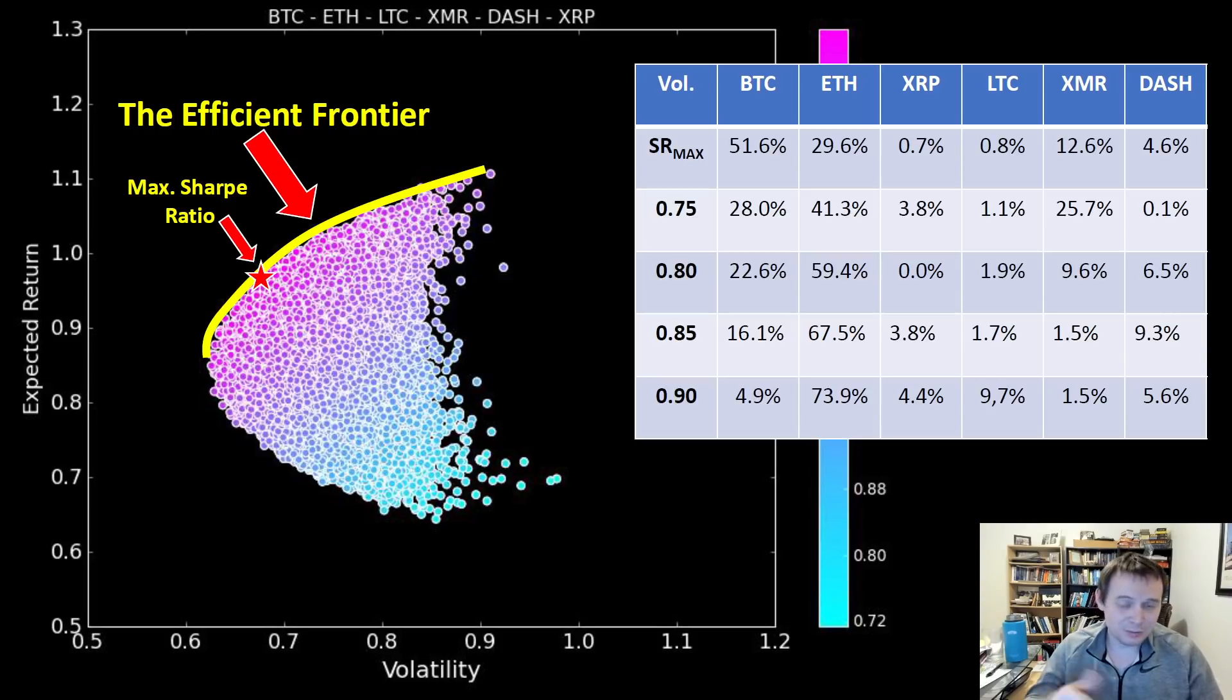But for Bitcoin and Ethereum it tends to fluctuate between the same numbers. I've seen it go as low as 60 Bitcoin for maximizing your risk adjusted returns if it's just Bitcoin and Ethereum, and I've seen it go much higher, up to 75 to 80 percent. It all depends on kind of where you are in the cycle.